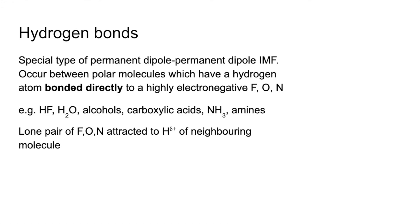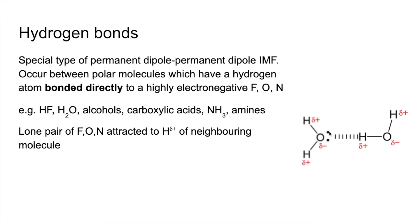In hydrogen bonding, the lone pair of the highly electronegative atom — fluorine, oxygen, or nitrogen — is attracted to the slightly positive hydrogen of a neighboring molecule. For example, in water, a lone pair on one oxygen is attracted to the delta-plus hydrogen on a neighboring water molecule.